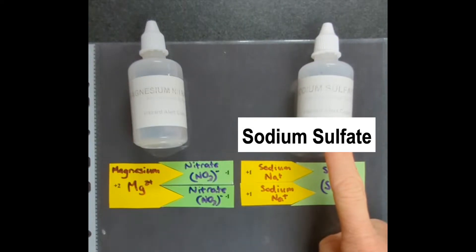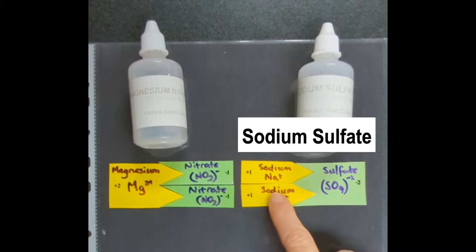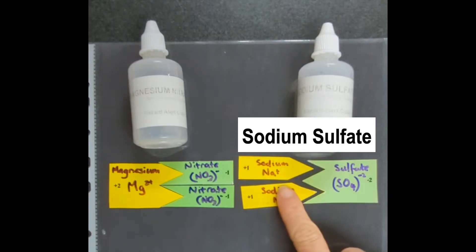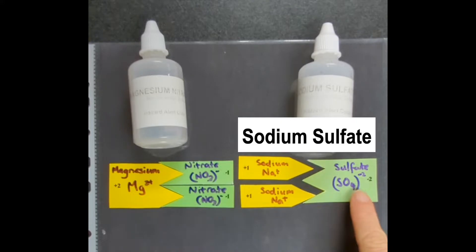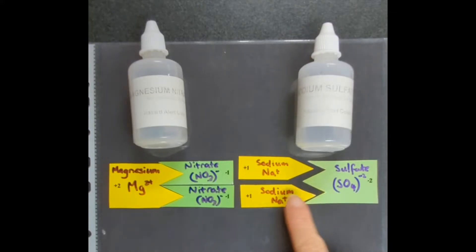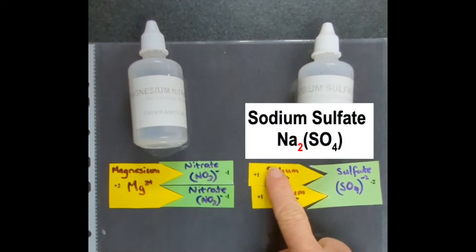Sodium sulfate is the other one we're reacting. Sodium has one plus charge for each ion, but sulfate actually has a charge of minus two. So for these guys to work, you actually need two sodiums to cancel out